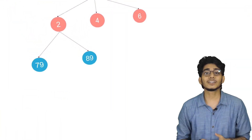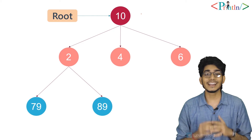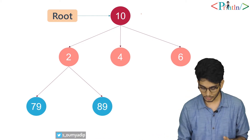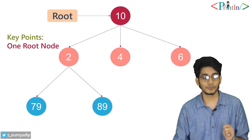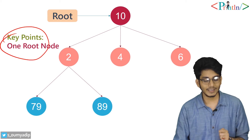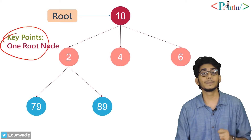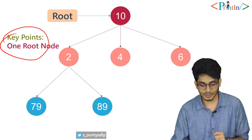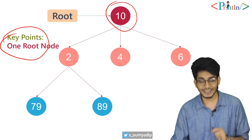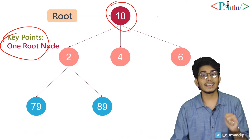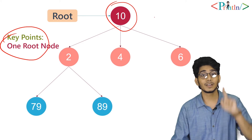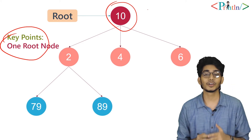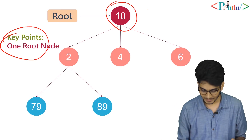Now we'll talk about what a root node is. In every tree there will be only one root node. In this tree, the root node is 10. There must be only one root node in every tree — without a root node we cannot define any tree.